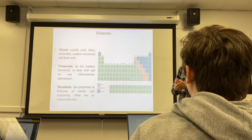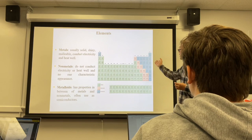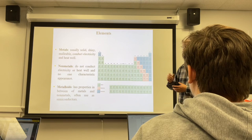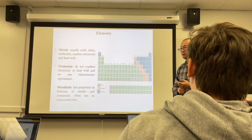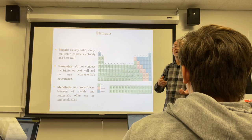So far we have discovered 118 elements in seven periods. Out of these elements, we classify them into three types based on their physical properties: metals, nonmetals, and metalloids.